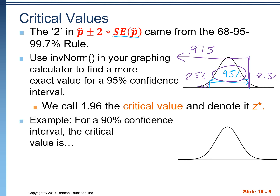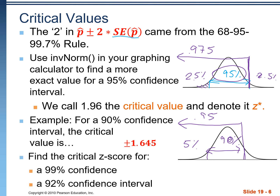We can use this to find a critical value for any confidence level — whether it's 90%, 99%, or any other value. For example, a 90% confidence interval has a critical value of 1.645, because we're putting in 95% to the left of that value in inverse normal. Try finding the critical Z score for a 99% confidence interval and a 92% confidence interval.